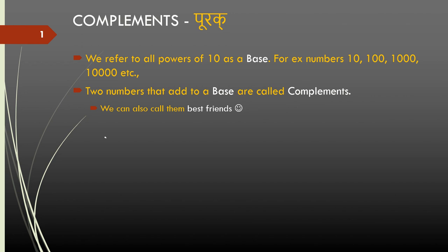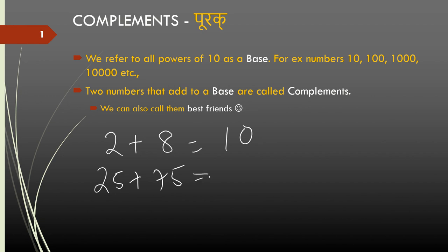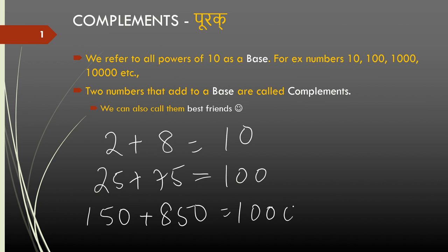For example, numbers 2 and 8 add to 10 and hence they are called complements. We can also call them best friends. 25 and 75 similarly add to 100 and hence we call them complements of each other. Another example: 150 and 850 add to 1000 and hence they are complements. Similarly, we can go on and find many more examples.